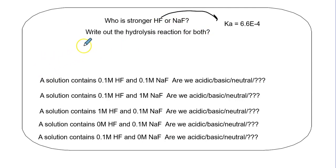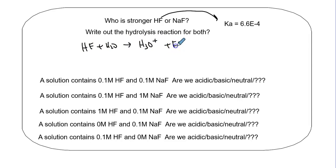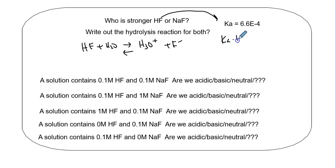Who is stronger - HF or NaF? The Ka value for HF is 6.6×10⁻⁴. So we have HF + H2O yields H3O+ plus F-. This is pushing forward, and of course F- is pushing back the other way. Our teeter-totter: Ka times Kb equals Kw.